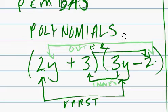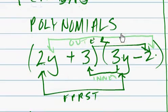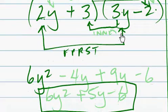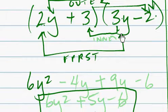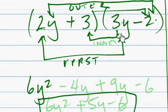And so 2 times 3 is 6y to the second. So 6y squared. We do the outer, which would be these two here. That's outer. So 2y times negative 2, of course, gives us negative 4y. And then we do the inner.